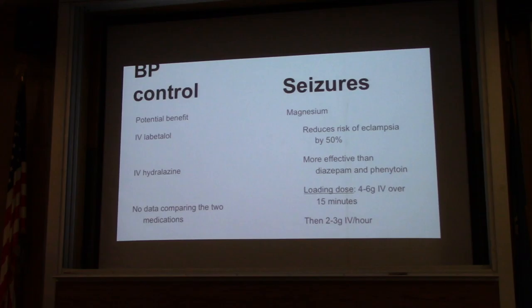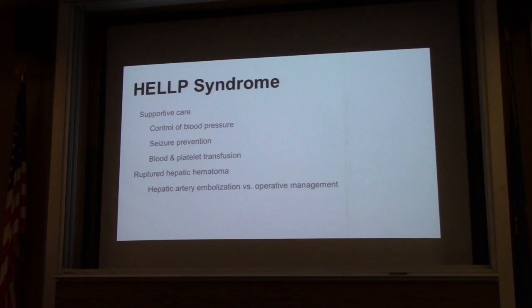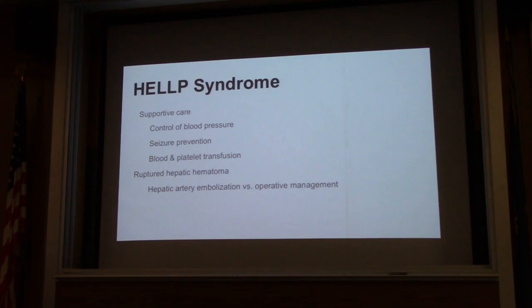The loading dose of magnesium is about 4 to 6 grams IV over the first 15 minutes, and then 2 to 3 grams IV per hour. In severe refractory cases of late postpartum eclampsia, there are case reports of patients who improved after uterine curettage, plasma exchange, and cerebral angioplasty, but these are all case reports and not really proven to have any benefit. For the management of HELLP syndrome, it's usually supportive care — controlling blood pressure, seizure prevention, and blood and platelet transfusion if symptomatic or numbers are very low. One complication from HELLP is a ruptured hepatic hematoma; in that case you can call IR to do either hepatic artery embolization or operative management depending on how stable your patient is.